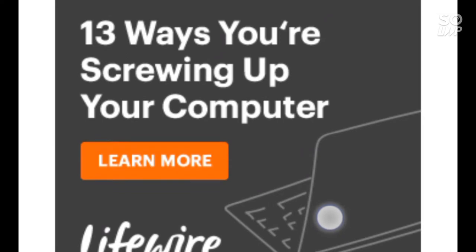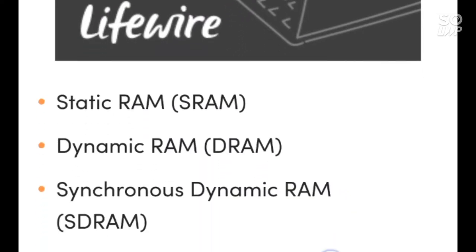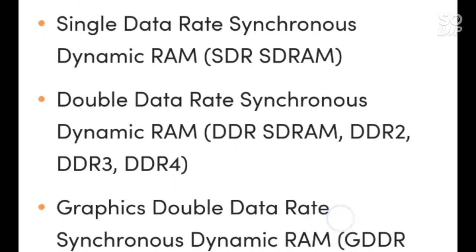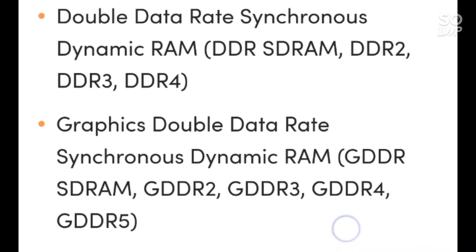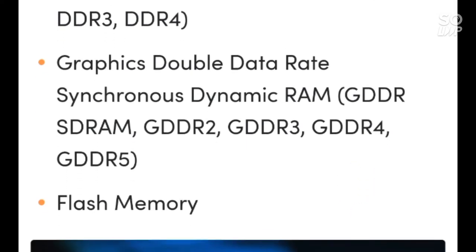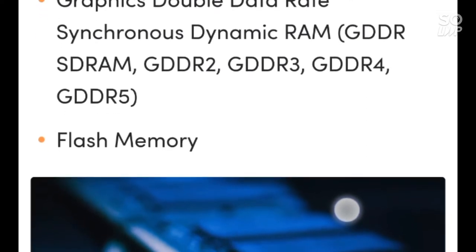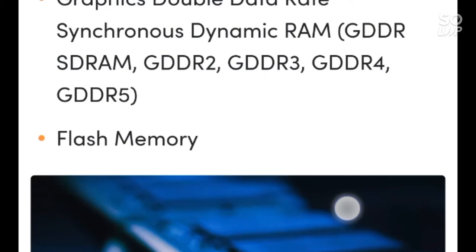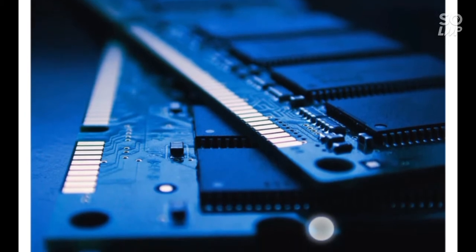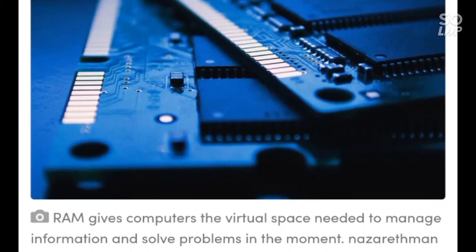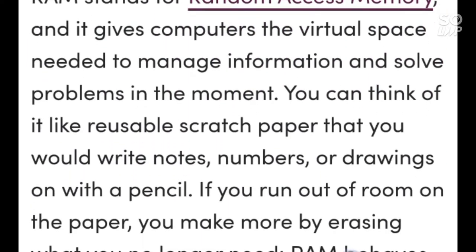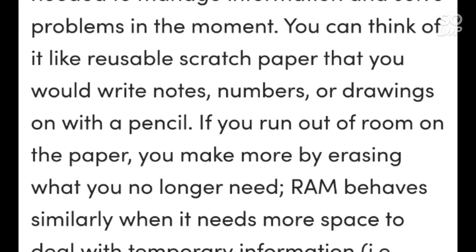All RAMs basically serve the same purpose. There are a few different types commonly in use today: Static RAM (SRAM), Dynamic RAM (DRAM), Synchronous Dynamic RAM (SDRAM), Single Data Rate SDRAM (SDR SDRAM), Double Data Rate SDRAM — DDR, DDR2, DDR3, and DDR4 — Graphics Double Data Rate SDRAM (GDDR) — GDDR2, GDDR3, GDDR4, GDDR5 — and Flash Memory.